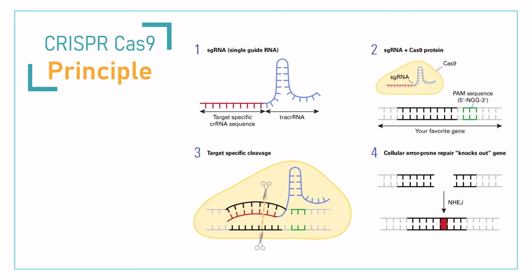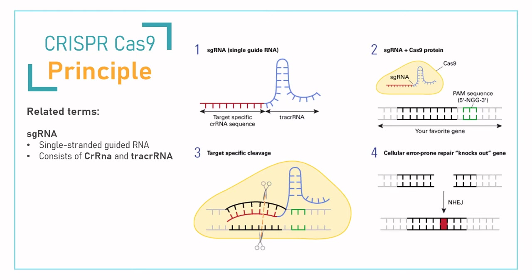So how does it work? For a better understanding of the mechanism, let's define related terms. First is the sgRNA, which stands for single-stranded guided RNA. It is a nucleic acid sequence used in gene editing for target-specific cleavage. This makes sure that the Cas9 enzyme cuts at the right point in the genome. It consists of CRISPR-RNA and tracer RNA. CRISPR-RNA sequences bind with the target sequence, and the tracer RNA binds to the nuclease domain. Next is PAM, which helps the Cas9 recognize the sgRNA and gives a signal to Cas9 for cleaving the DNA. Next is NHEJ, a pathway that generates insertions and deletions in double-stranded break DNA repairs.